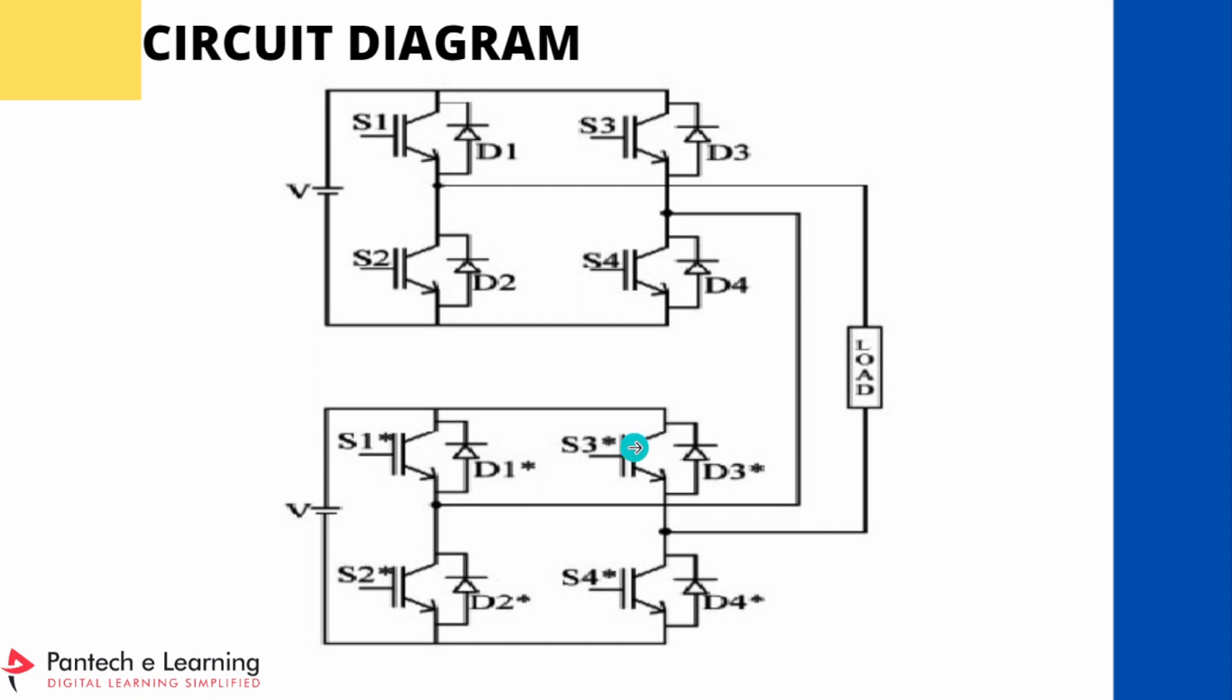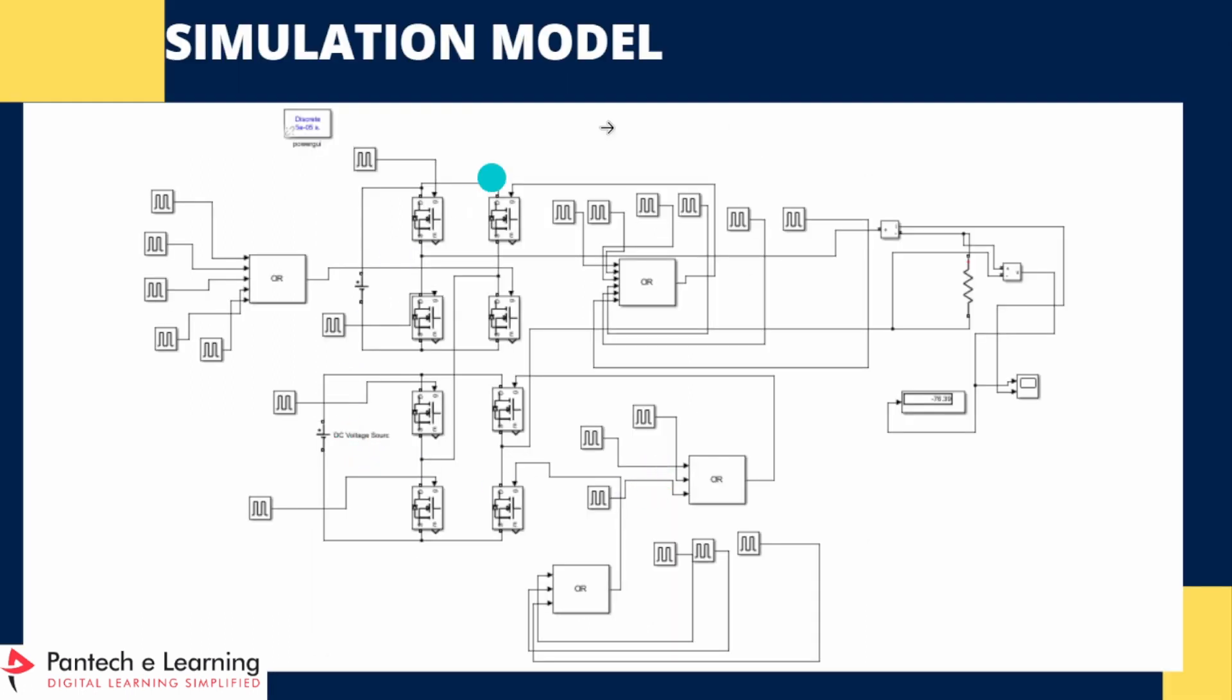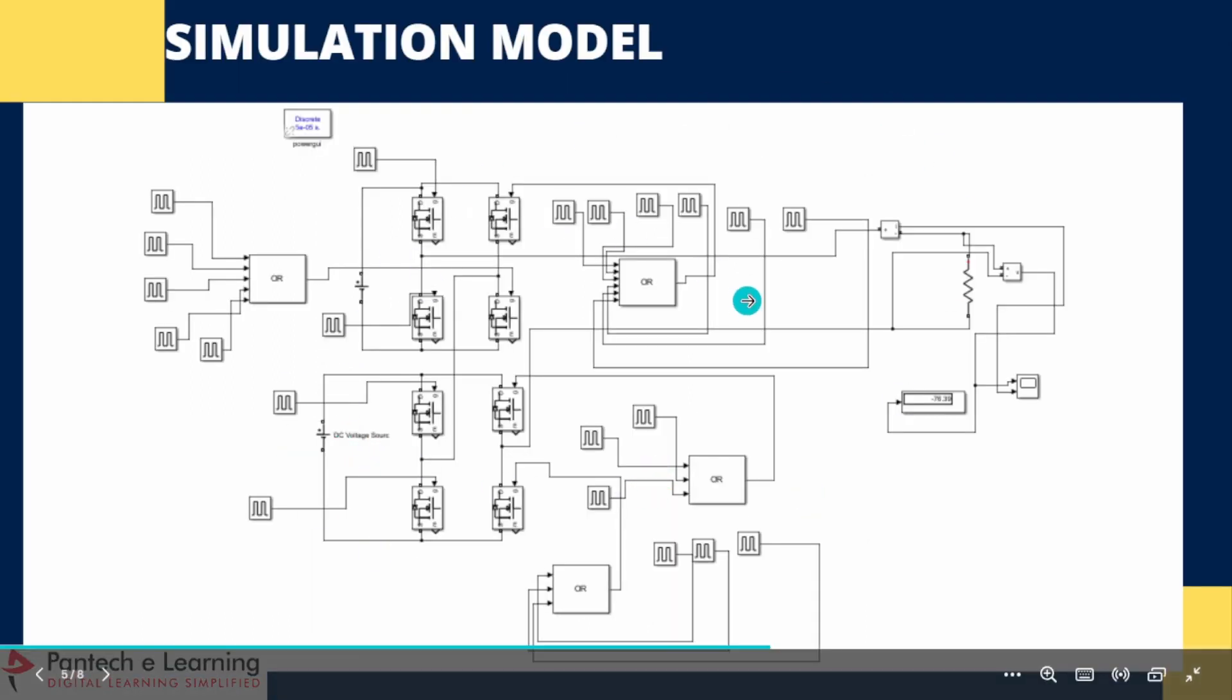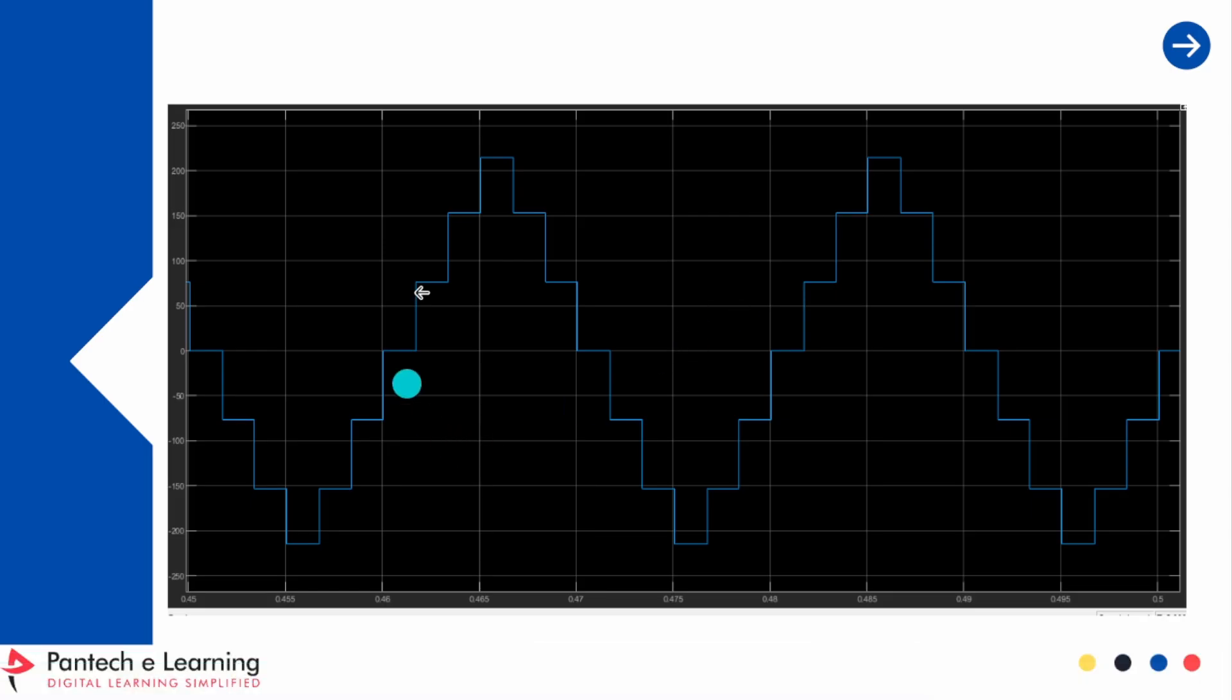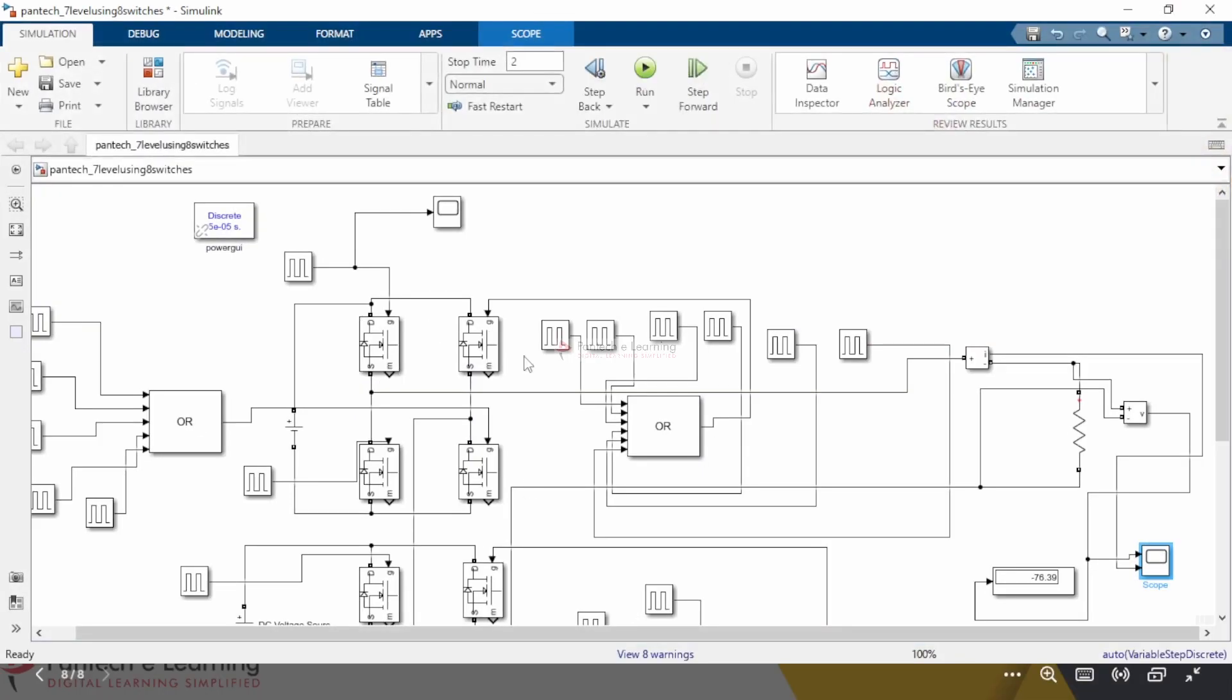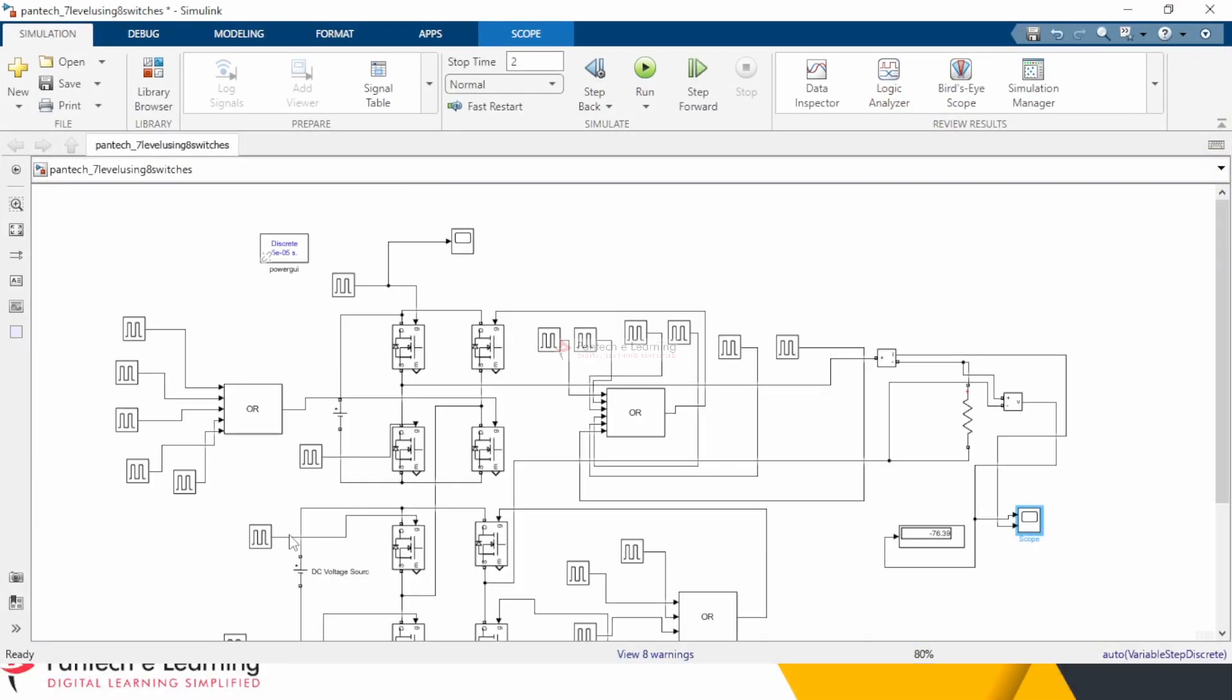If the number of levels increases, the number of DC sources also increases. This is our overview of a simulation model. And this is our output. So, it looks like a staircase output waveform. It's almost looks like a sinusoidal. Now, we are going to take the MATLAB software. Open the model.